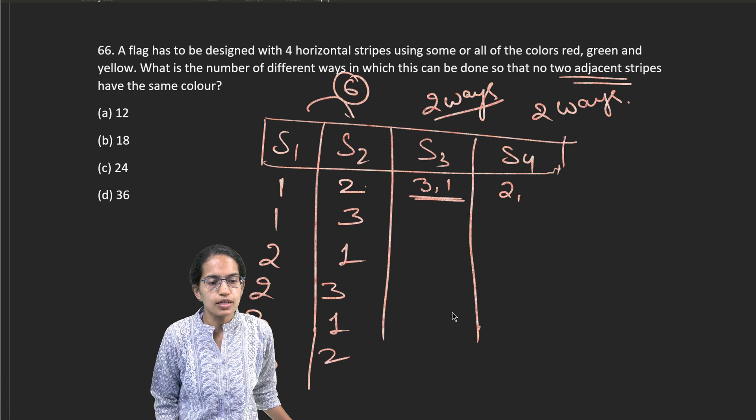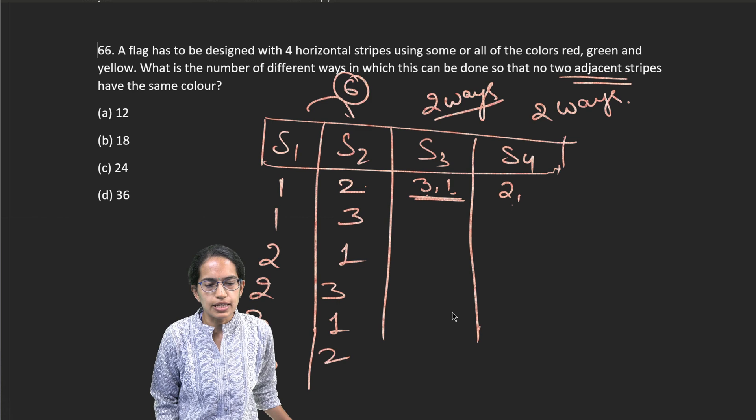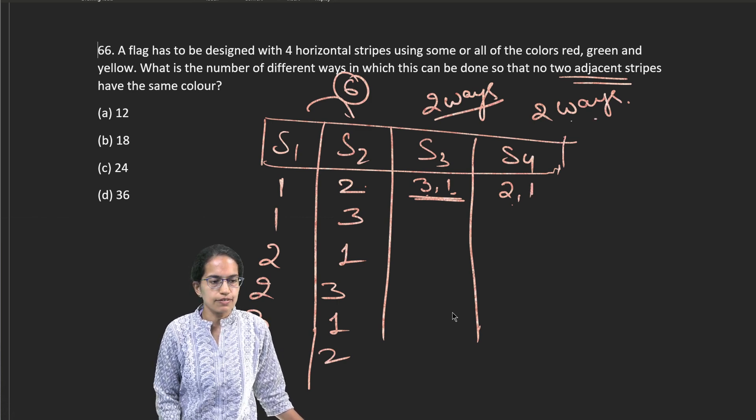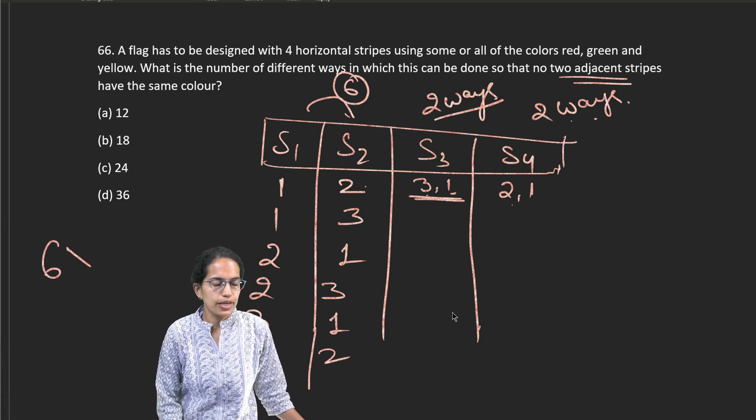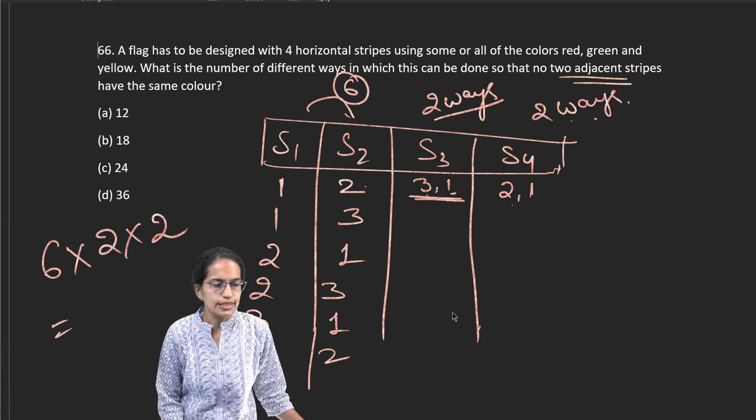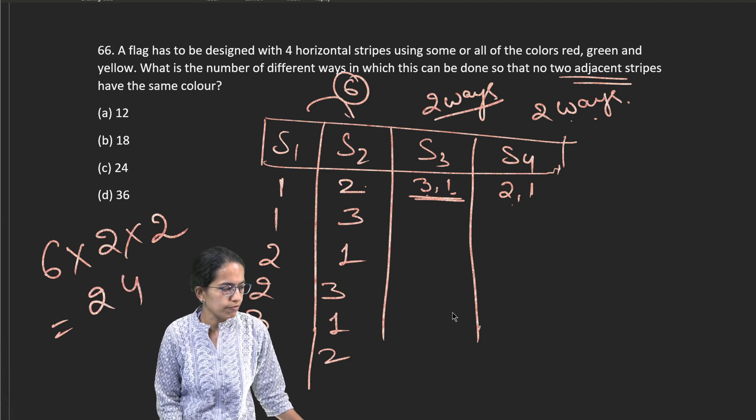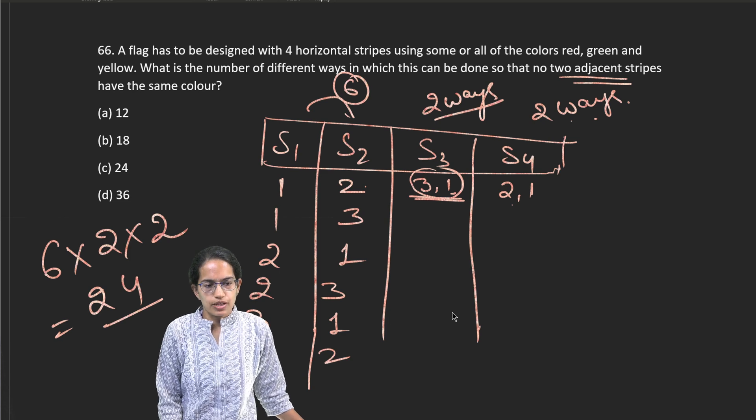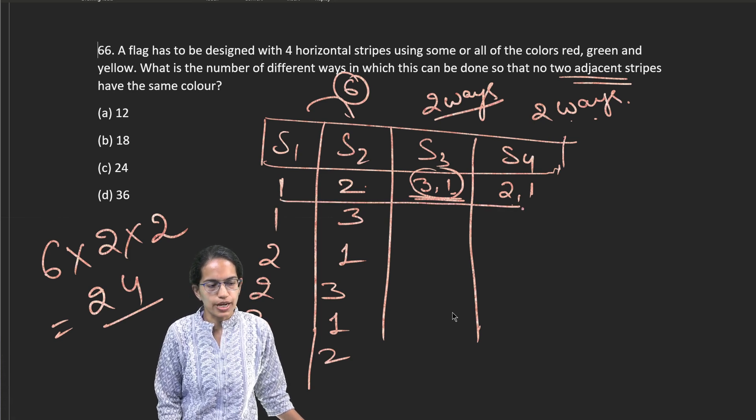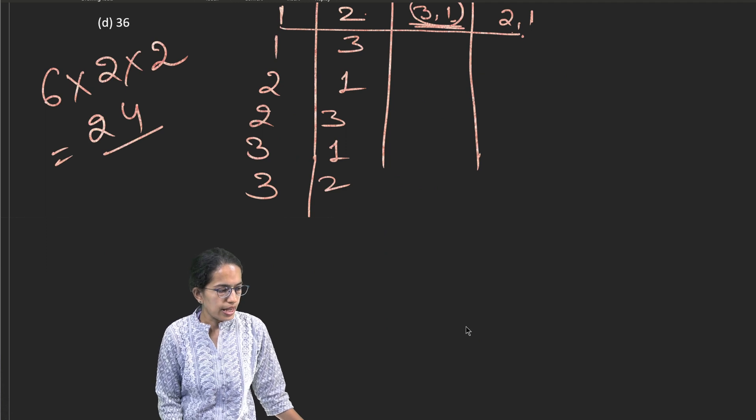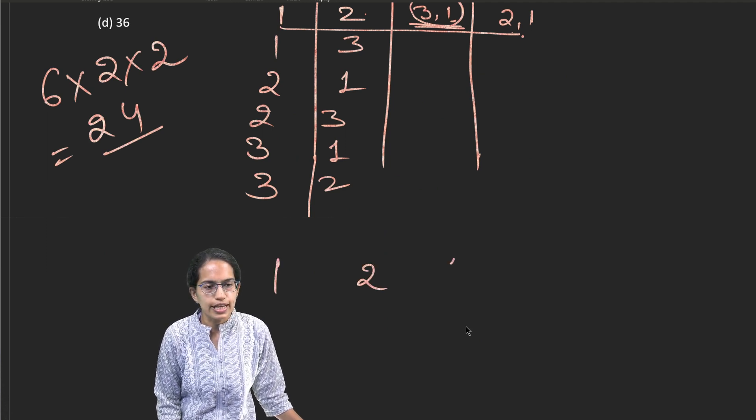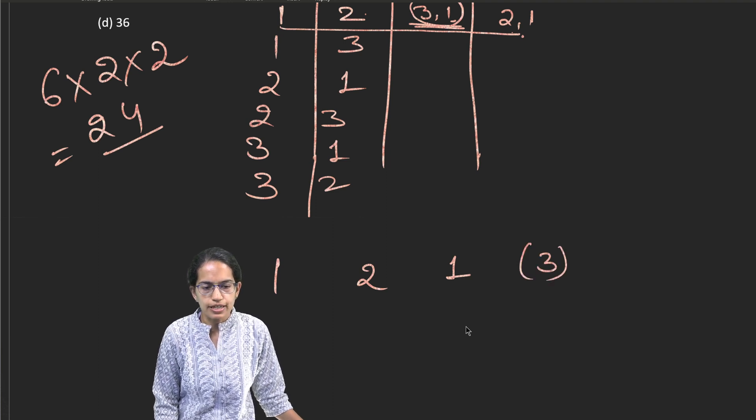Now what can be the numbers here? Here either it can be three or it can be one. Two cannot be there because it would be adjacent. So there are two ways in which I can fill S3. Very important. Now again S4 can be filled in two ways. I can have either two here or if I'm taking one I can have two here. If I'm taking three I can have one here. Clear? So there can be two ways in which I can fill here. So what would be it? 6 into 2 into 2. So that's 6 into 4 that is 24.